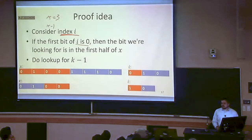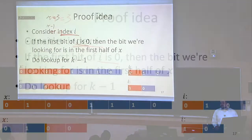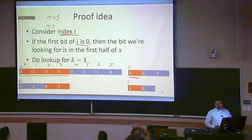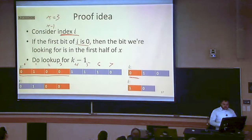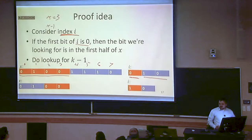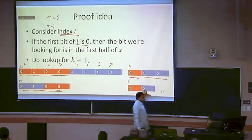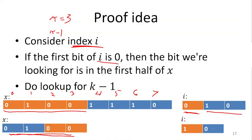The way we'll do this: consider that we're trying to look at index i in our bit string. If the first bit of i is 0, then whatever bit we're looking for is in the first half of the string — the largest number we could be talking about is 3. On the other hand, if the first bit of the index was 1, the smallest number we could be talking about is 4, so whatever bit we're looking for must be in the second half. Once we've established which half, we can use the rest of the index to look into that half — the result is the same as whatever we were looking up in the larger original problem.